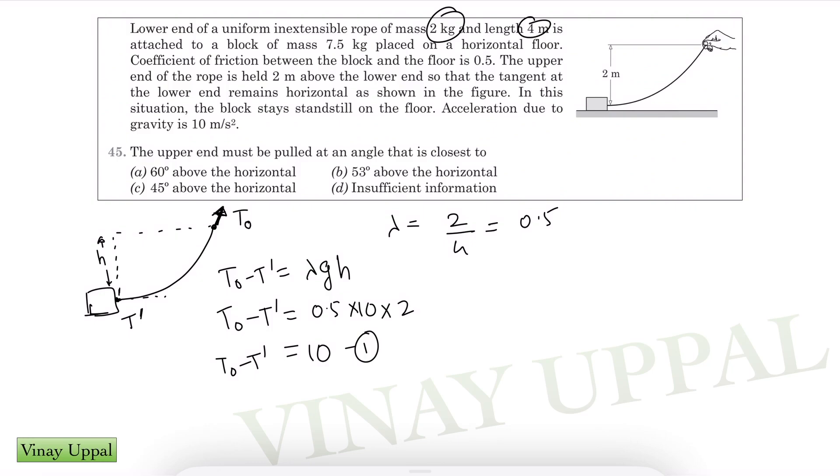The other equation is that the vertical component of T0, let's say this angle is theta, has to balance the weight of the rope. So T0 sin theta should be equal to 20 newtons, mass is 2 kg.